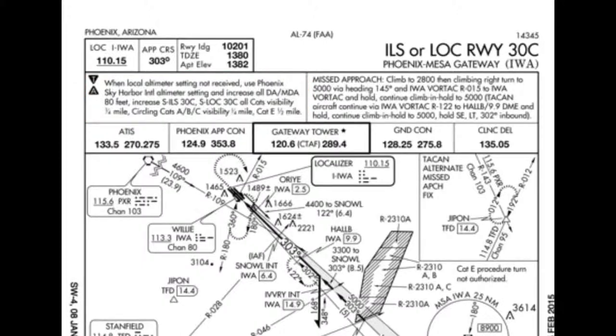Here in this notes box, there's a T and a small A. The T means it has non-standard takeoff minimums, and the A means non-standard alternate minimums.